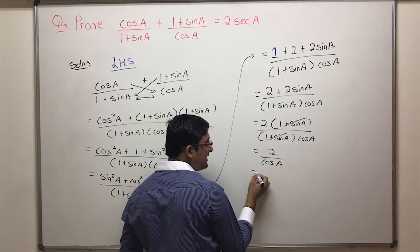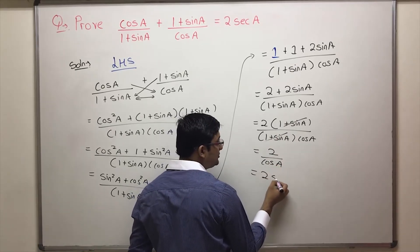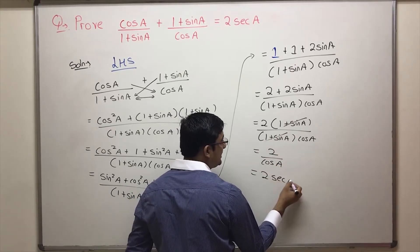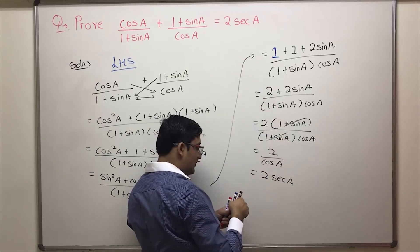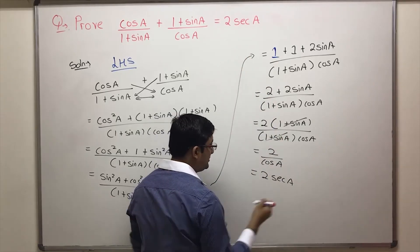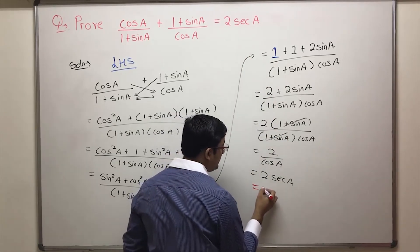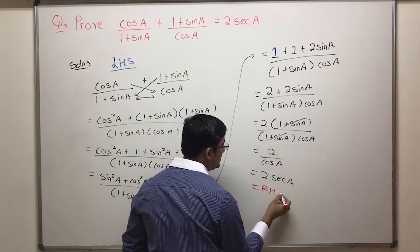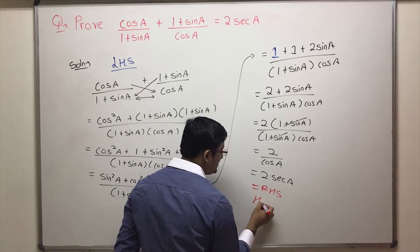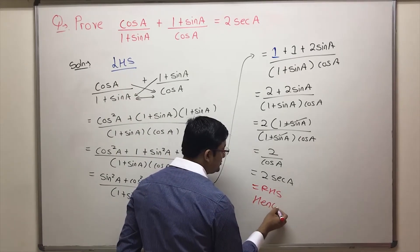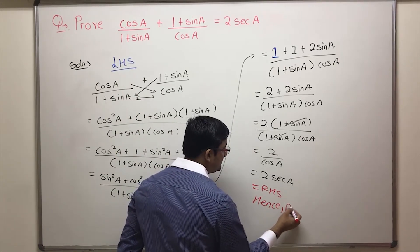We get 2 by cos A. And 1 by cos A is sec A. So this is 2 sec A, which is exactly our RHS. This is equal to the RHS — we began from the LHS and arrived at the RHS. Hence proved.